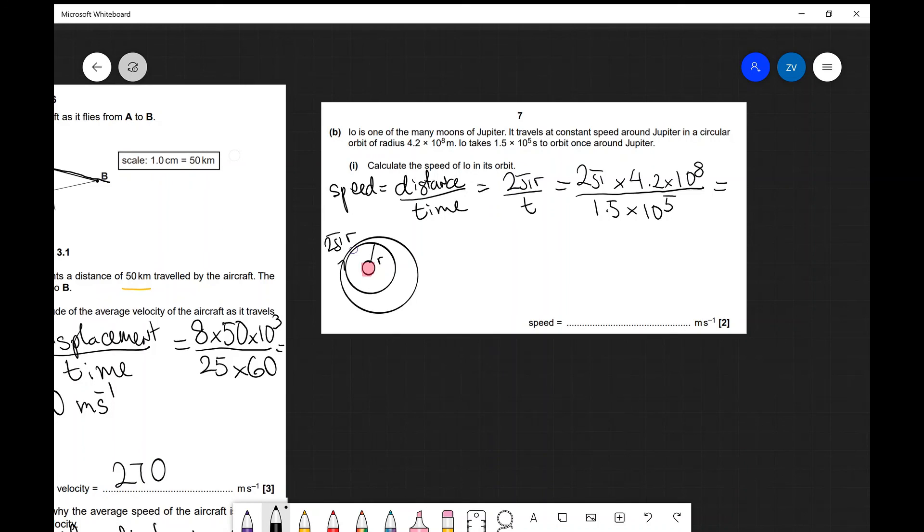Now if I put that into a scientific calculator I am going to get 17592 so let's stick to two significant figures which is going to lead us to 1.8 multiplied by 10 to the power of 4 meters per second. So this is the speed of one of Jupiter's moons 1.8 times 10 to the 4 meters per second. As always with all calculations we're going to get one mark for the substitution mark over here and one final accuracy mark for the final answer.